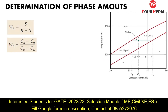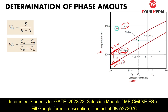Here you can see the determination of phase amount. Suppose a simple phase diagram is given, with temperature on the y-axis and composition on the x-axis. Above a certain line, only liquid is present — this is called the liquidus line. Below another line, only solid (alpha) is present — this is called the solidus line. The region between them, where both solid and liquid are present, is called the mushy zone.